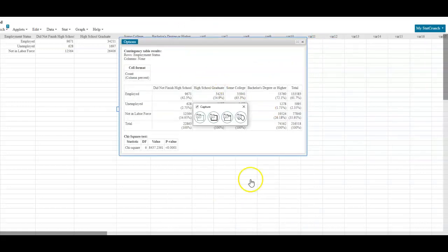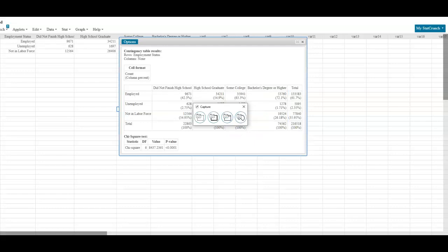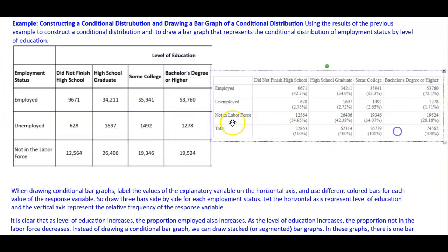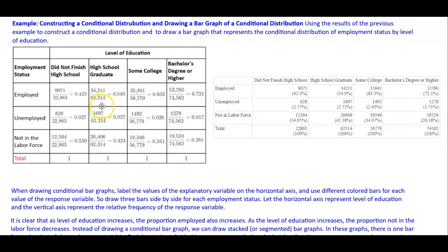We're going to copy from the output here and compare it to the example we did earlier on creating a conditional distribution. We end up having 0.423, which is the same as 42.3 percent; 0.549, which is 54.9 percent; 0.633, which is 63.3 percent; and 0.721, which is 72.1 percent. You can see this matches our conditional distribution from the previous example.